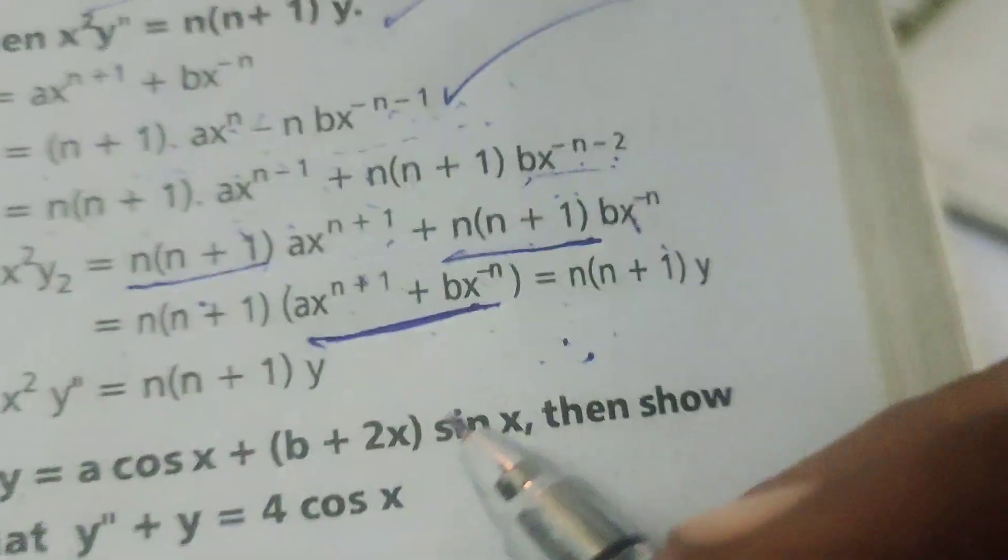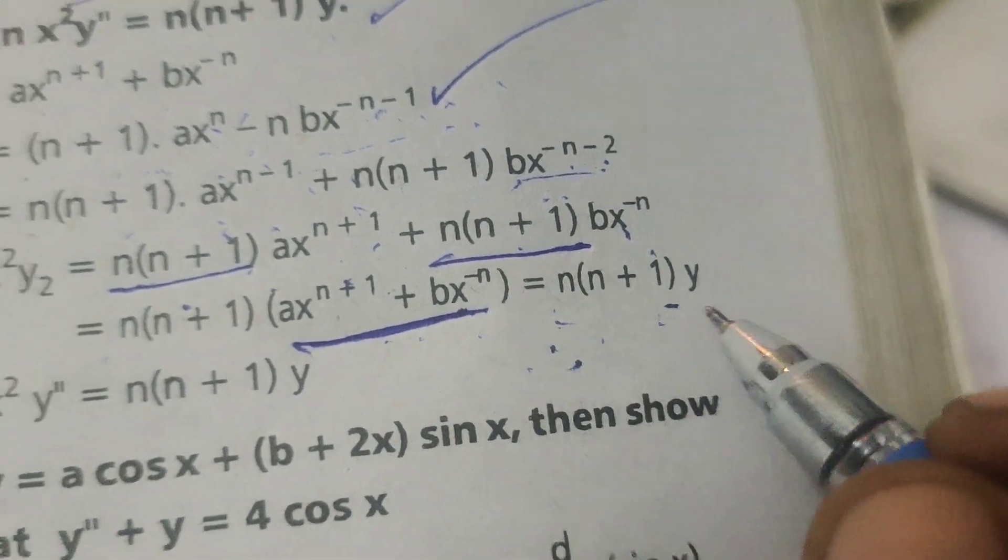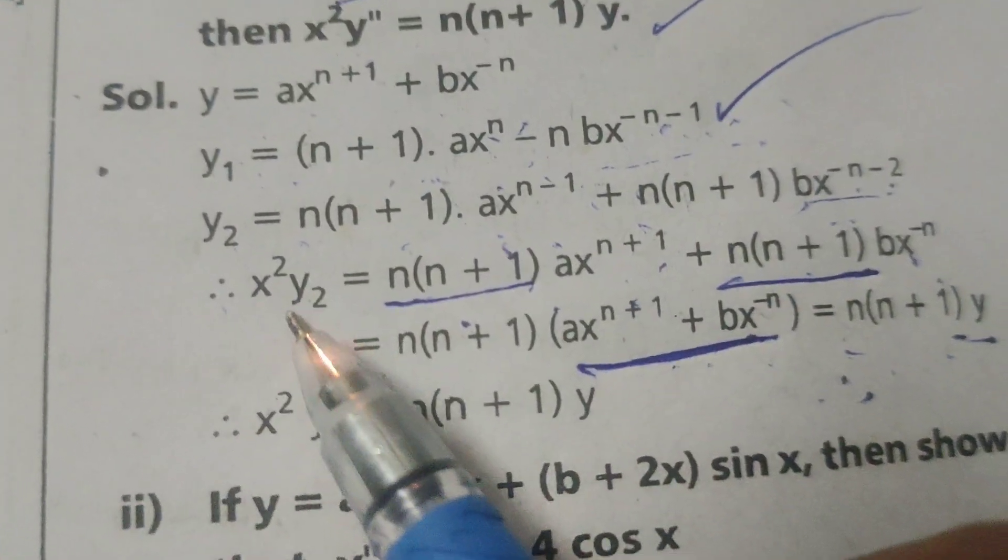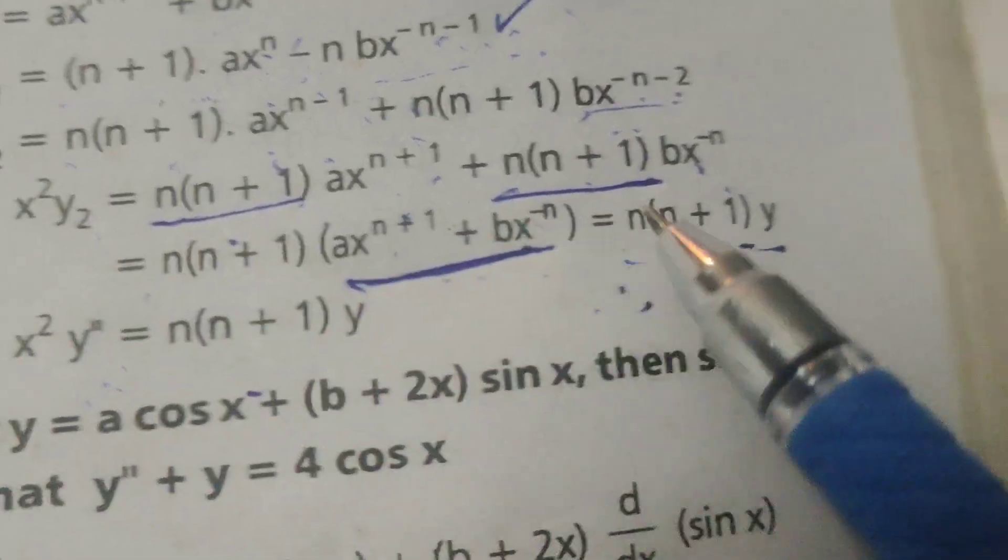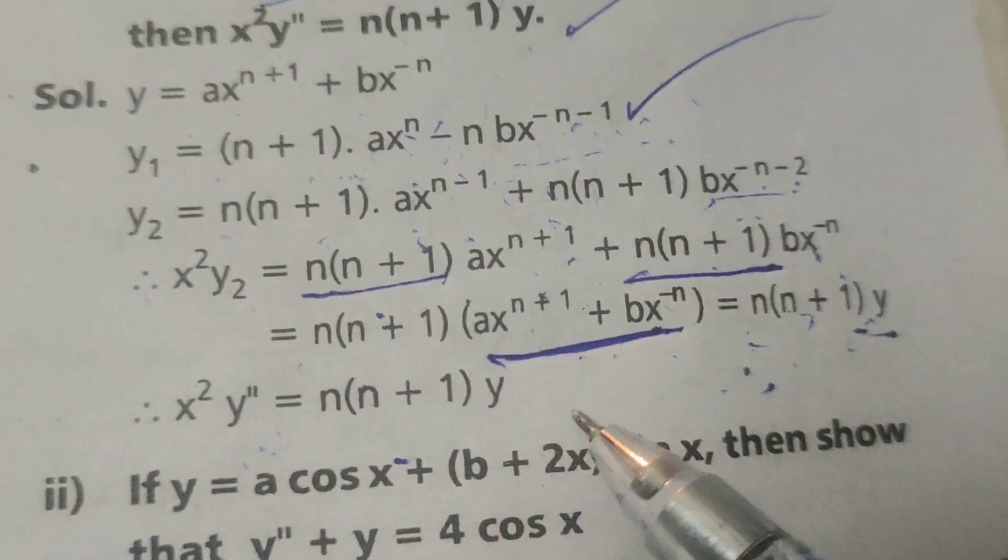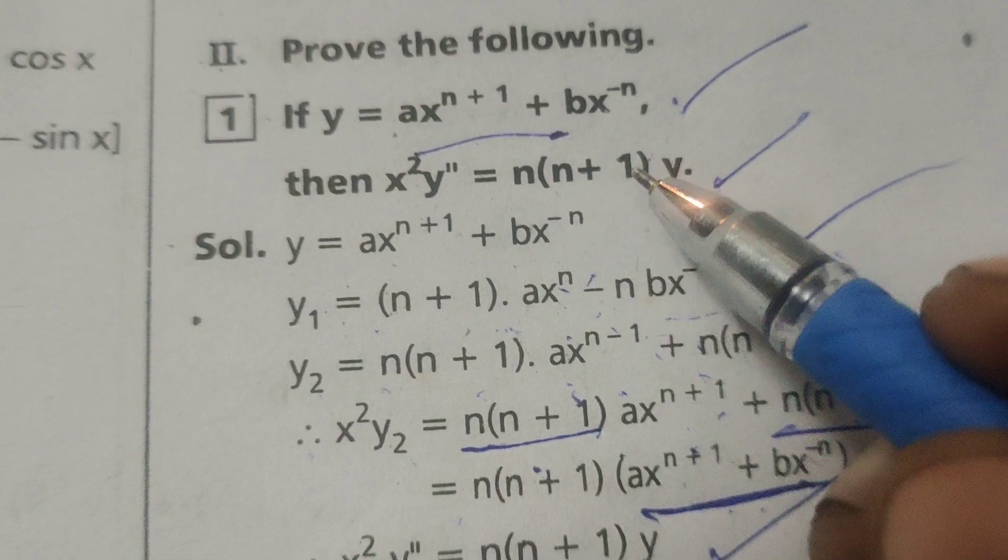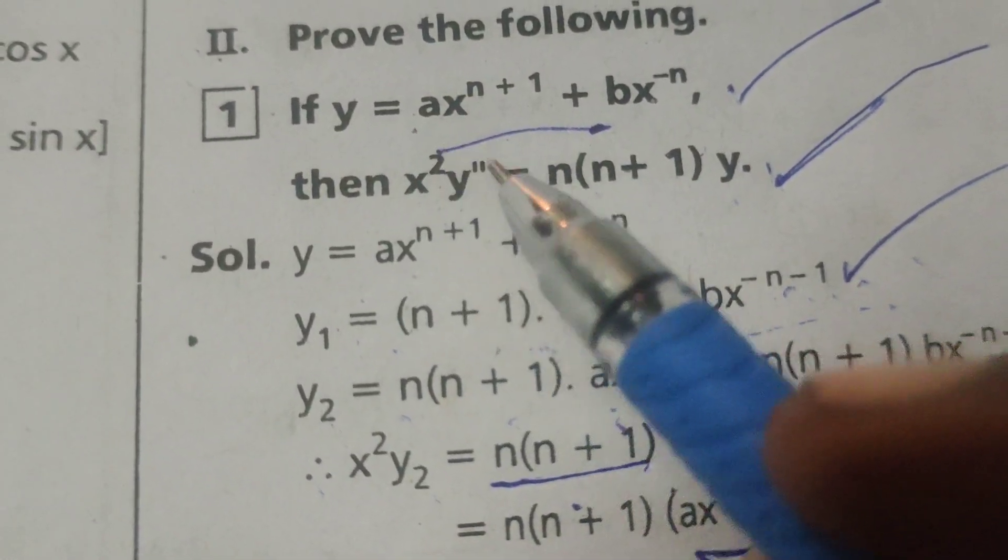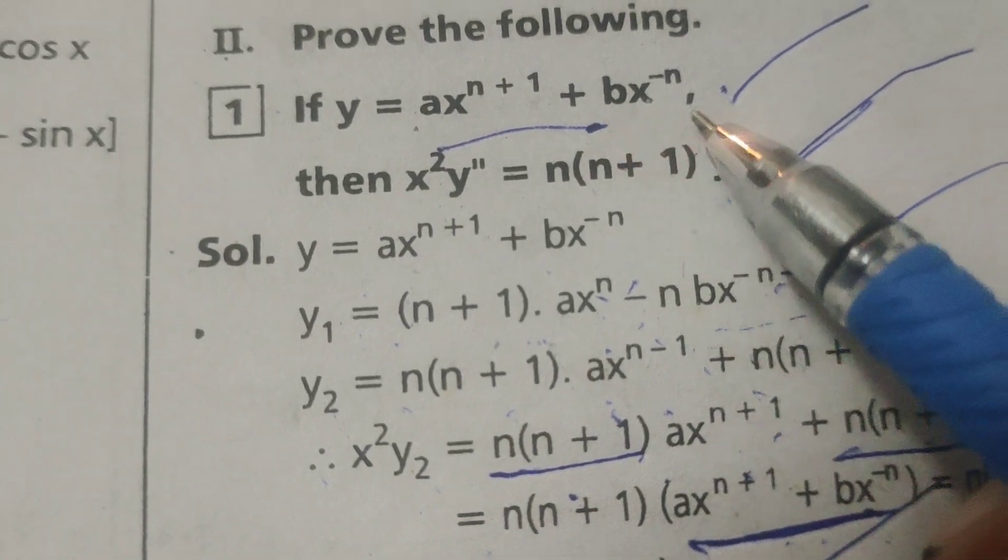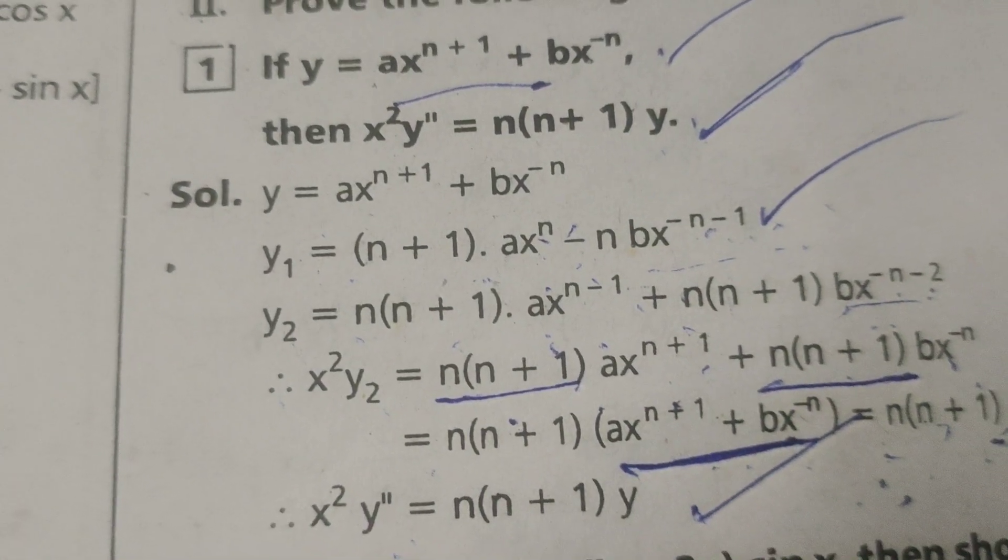So substitute y, n into n plus 1 into y. The LHS x square y2 or y double dash equals n into n plus 1 into y. Hence proved, the required condition if y equals ax power n plus 1 plus bx power minus n. Thank you.